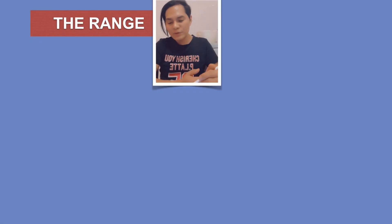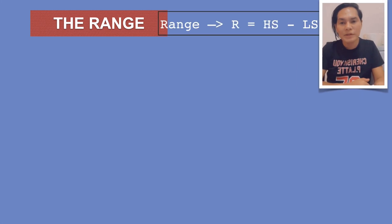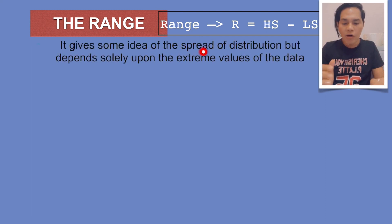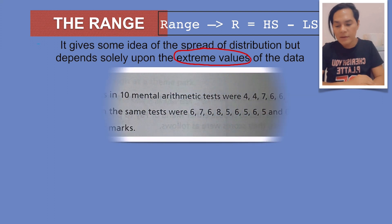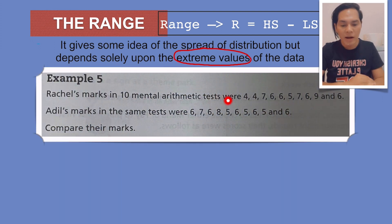We are down to our last one, which is the range. The range is obtained by subtracting the highest score by the lowest score. The range gives some idea of the spread of distribution but depends solely upon the extreme values of the data. In order to understand this, let's give an example. Rachel's marks in 10 mental arithmetic tests were 4, 4, 7, 6, and so on and so forth, while Adil's marks in the same test are the following. Compare their marks.